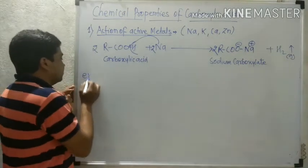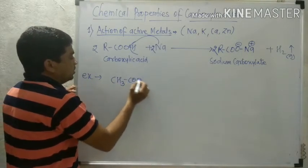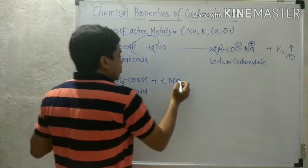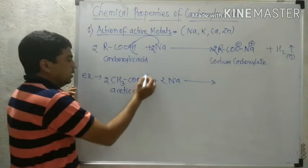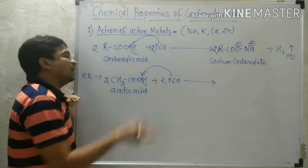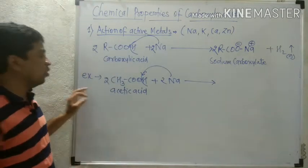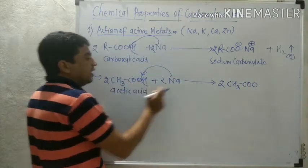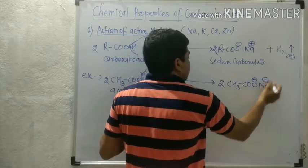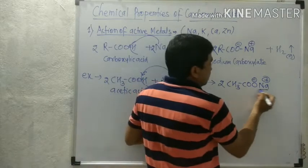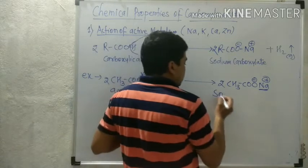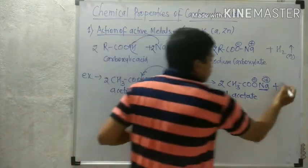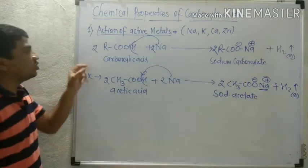For example, if two molecules of acetic acid (CH₃COOH) are taken and reacted with two atoms of sodium, one hydrogen from each molecule is replaced by sodium. We obtain two molecules of CH₃COO⁻Na⁺, which is sodium in the structure of acetic acid — therefore called sodium acetate — along with evolution of hydrogen gas.